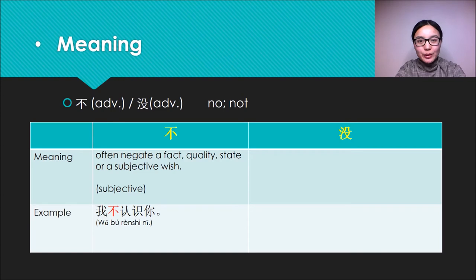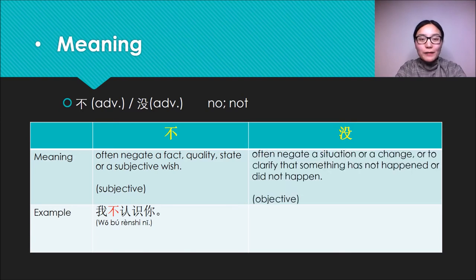However, Mei often negates a situation or a change, or to clarify that something hasn't happened or didn't happen. So it stresses objective. For example, I didn't go to work yesterday. This sentence expresses something that hasn't happened, so we use Mei to clarify it.